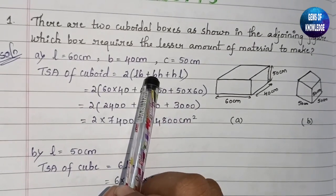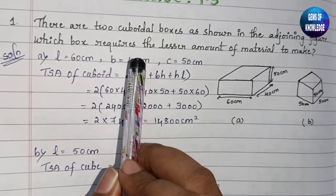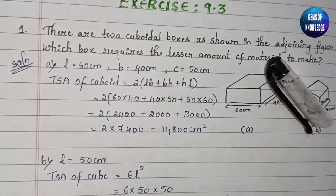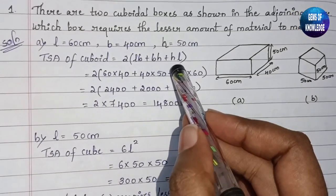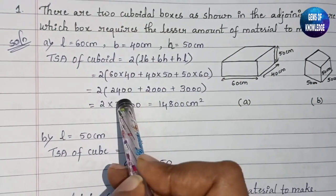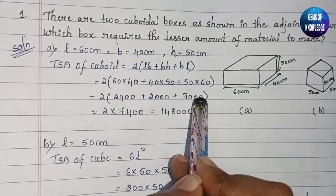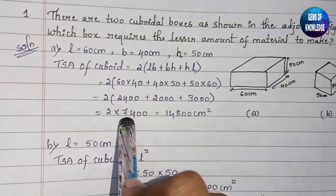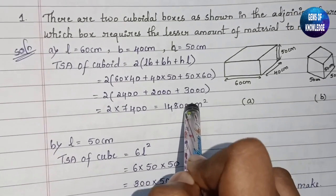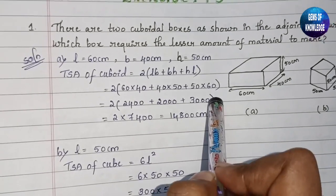The formula is TSA = 2(lb + bh + hl). Substituting: 2(60×40 + 40×50 + 50×60) = 2(2400 + 2000 + 3000) = 2 × 7400 = 14,800 cm². The total surface area is in square units because area is always expressed in square units.